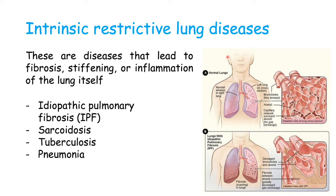Here we have a normal lung showing how the alveoli are supposed to look, and then lungs with idiopathic pulmonary fibrosis. In the space between the alveoli, you have fibrosis — scar tissue laid instead of normal lung tissue, usually caused by chronic damage to the lungs. This scar tissue cannot inflate or expand as well as normal lung tissue, and that is one type of restrictive lung disease.